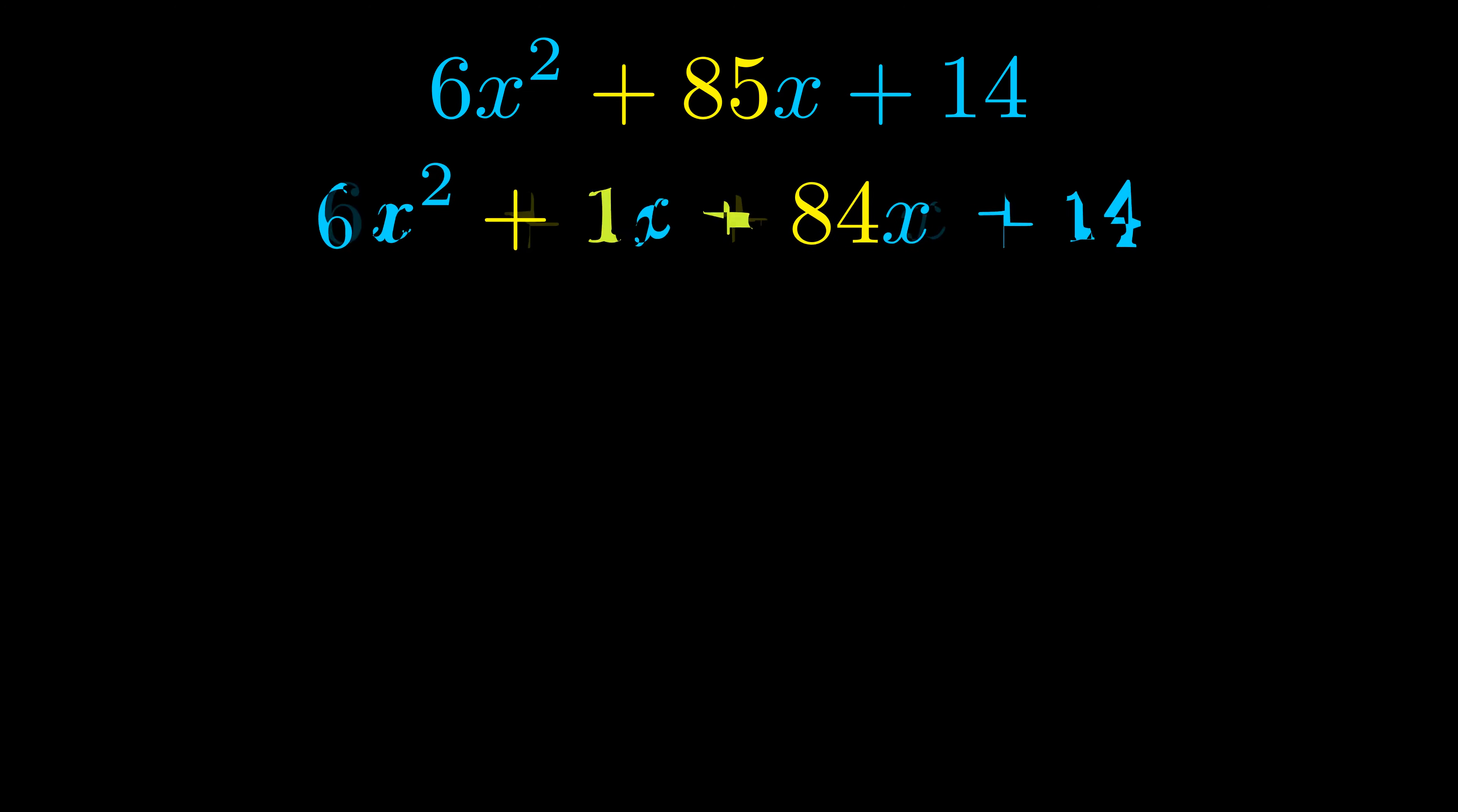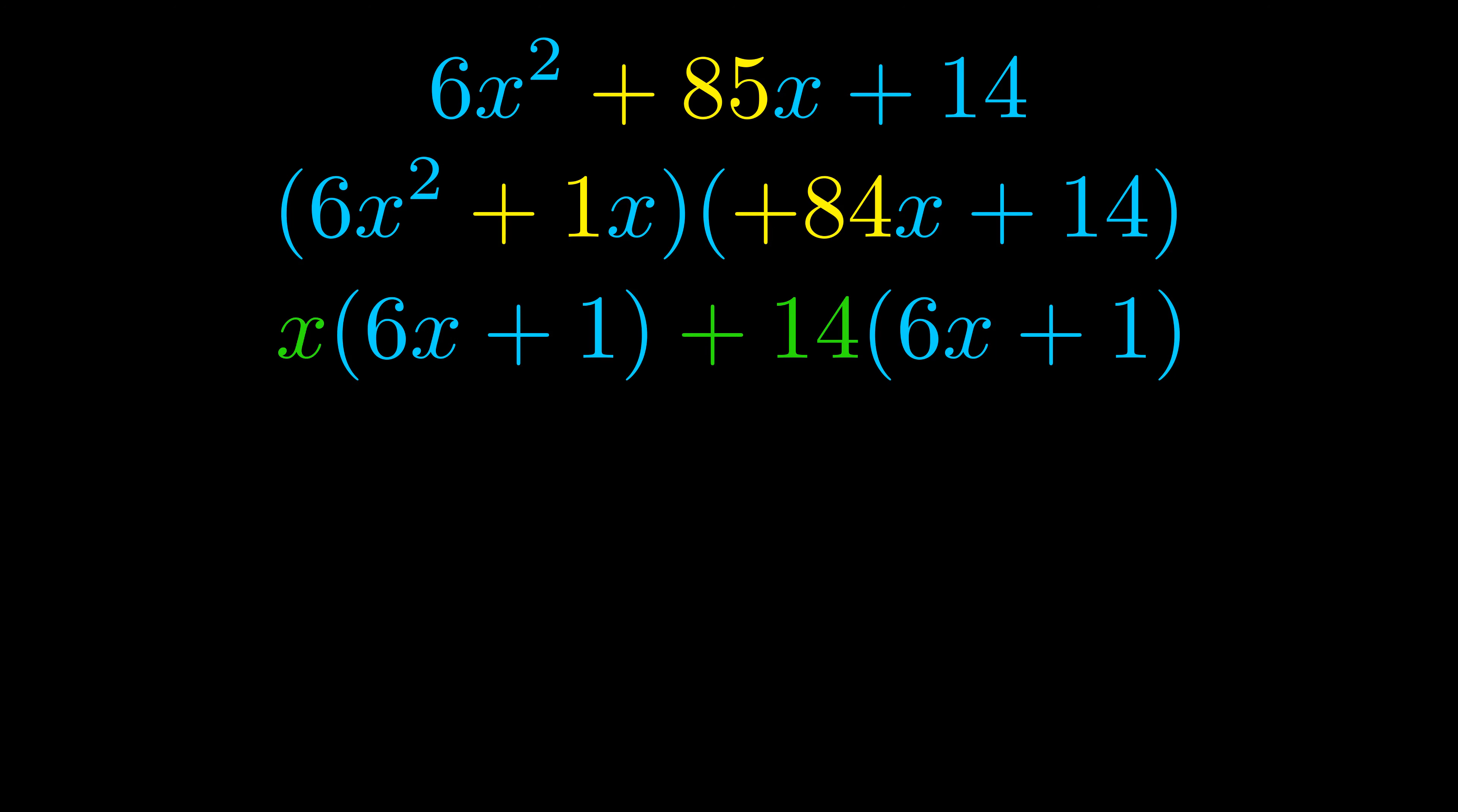Once we've done this we go ahead and we put parentheses around the first term and the last term. And we do that so that we can take the greatest common factor out of both terms. We can see the greatest common factor is now outside in green. Notice also how what remains inside of the parentheses is the same in both cases. The blue values are the same.